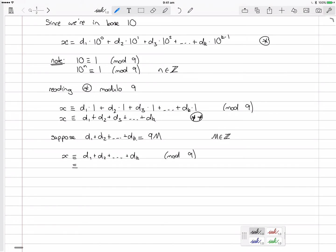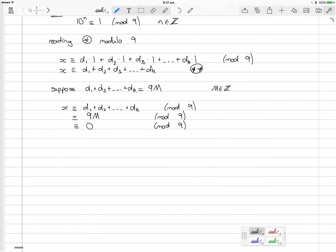So now I have that x is equal to 9M mod 9. Ah, but we're looking mod 9. So 9 times M, well 9 is equivalent to 0 mod 9. So this is now 0 mod 9 because it's 0 times M. But what does that mean? If x is equivalent to 0 mod 9, that tells me that x is an integer multiple of 9. Integer multiple of 9. And what does it mean to be an integer multiple of 9?